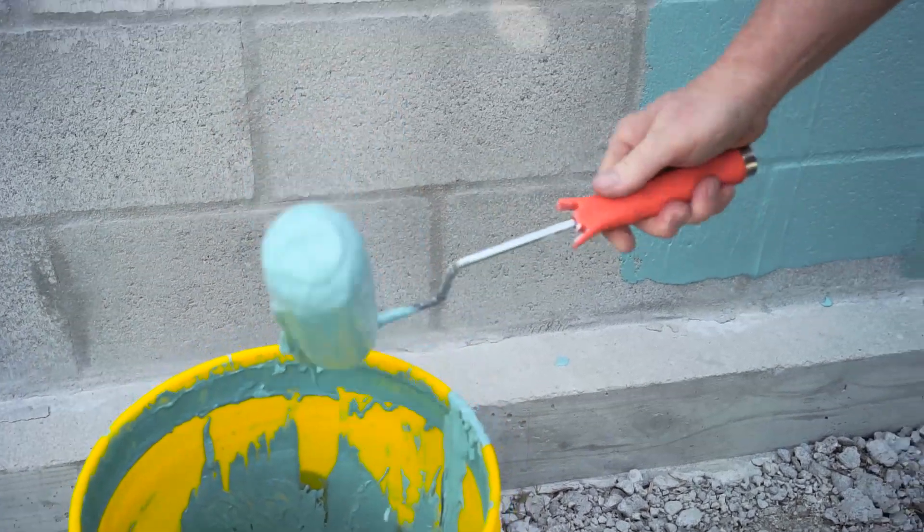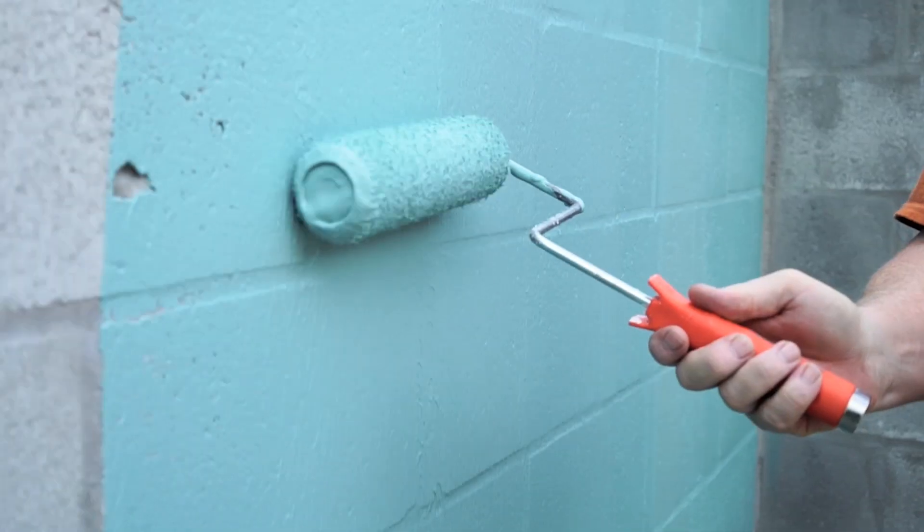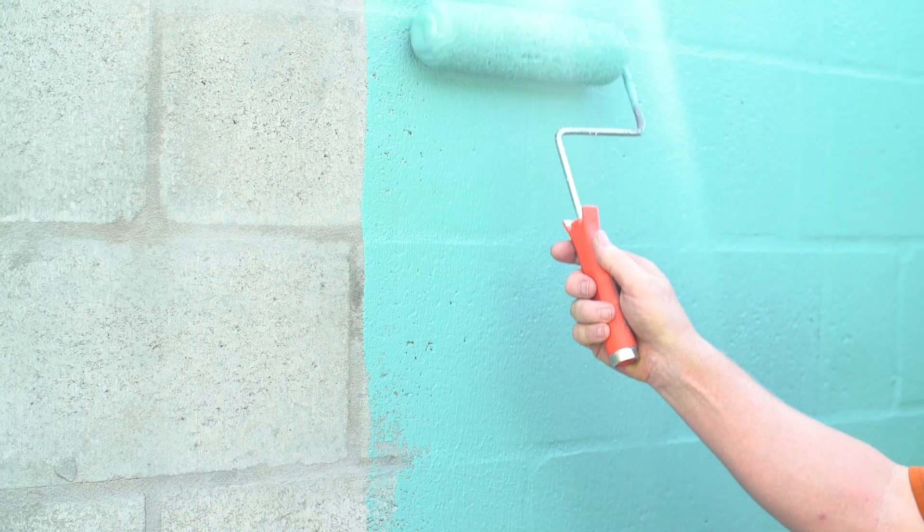StoGuard AirSeal can be rolled or sprayed. When rolling, a three-quarter inch nap roller is preferred for application.